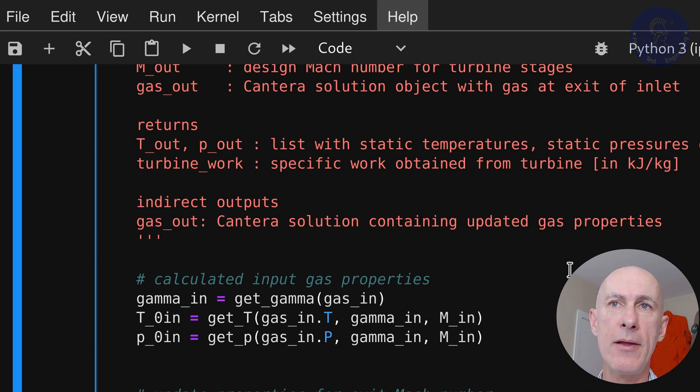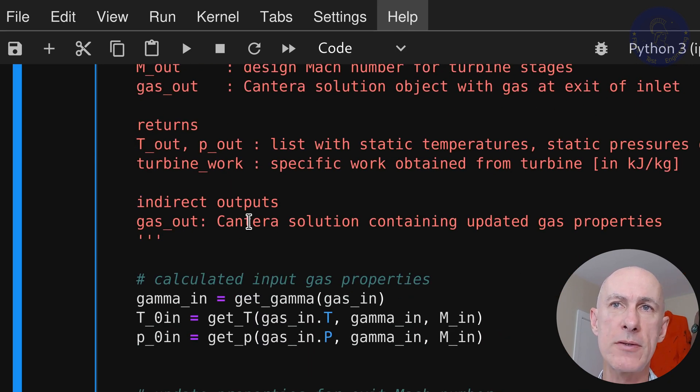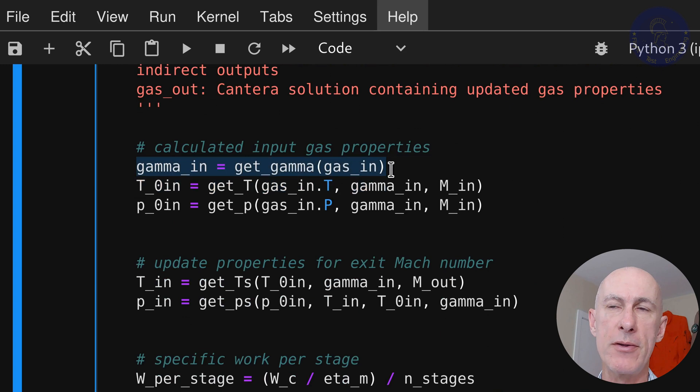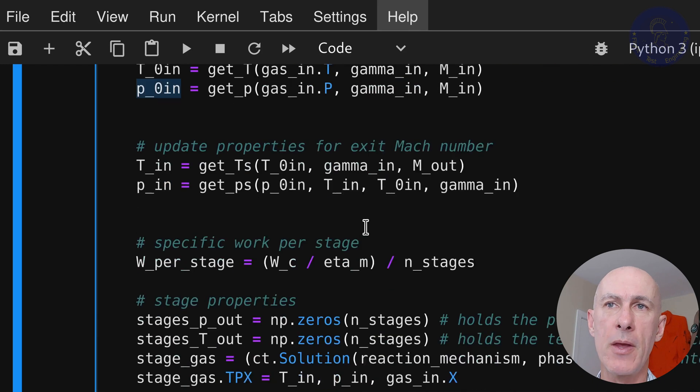We start here by the calculated inputs. So we start by getting the gamma for the incoming gas and calculating the stagnation temperature and pressure, just like what we did before. And then we get the specific work. We divide the work required by the compressor and associated mechanical losses, which gives us WTC, by the number of stages so that we know how much work to extract at each turbine stage.